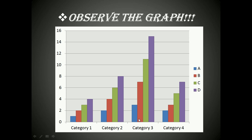Category three represents heights of 3, 7, 11, and 15 — each increasing by four units uniformly. Category four, however, increases from blue to red by one unit, red to green by two units, and green to purple by two units — the height increases but not uniformly, not identically. So the odd one out is category four.